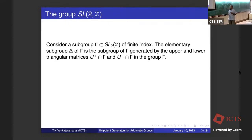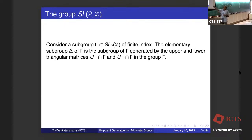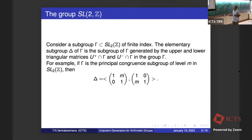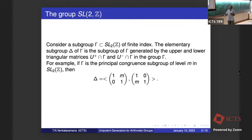Let's start with a subgroup of SL₂(ℤ) of finite index. The elementary subgroup of Γ is the subgroup of Γ generated by the upper and lower triangular matrices. I will denote them U⁺ ∩ Γ and U⁻ ∩ Γ — these are upper and lower triangular matrices in Γ. For example, suppose I take the principal congruence subgroup of level M in SL₂(ℤ), that is all matrices ABCD such that this matrix is congruent to the identity matrix modulo M.